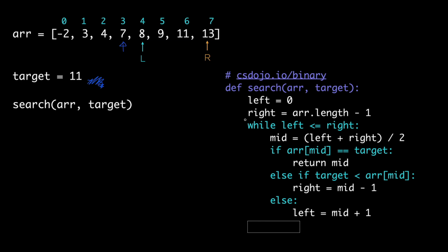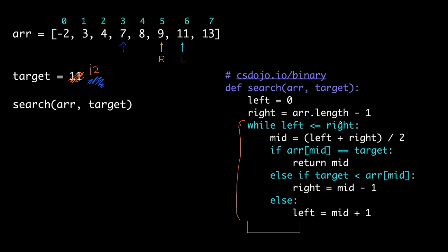We keep repeating the while loop until we either find the element at mid equals target and return mid, or left becomes greater than right. For example, if the target is 12 which doesn't exist in the array, eventually L will come to the right of R, so left will be greater than right, we exit the while loop, and return minus 1 to show the target doesn't exist in the array.